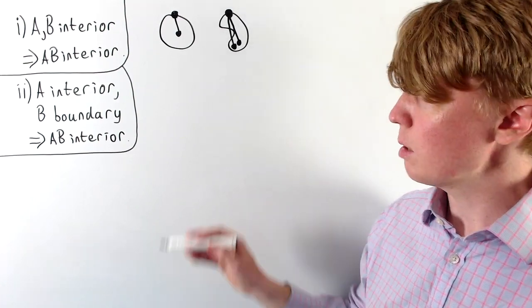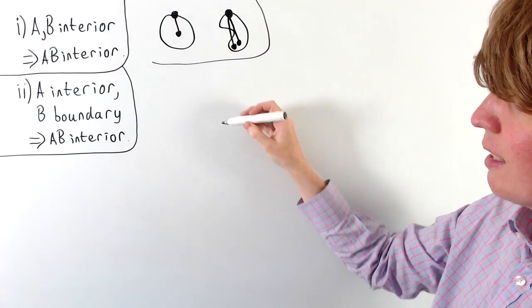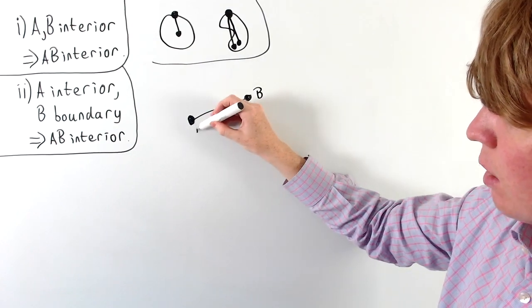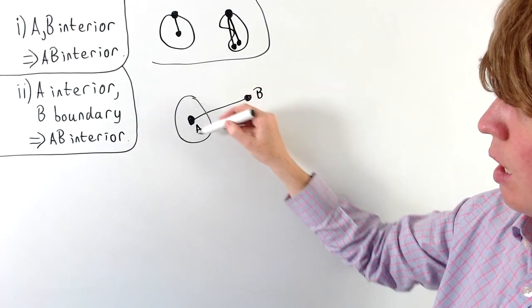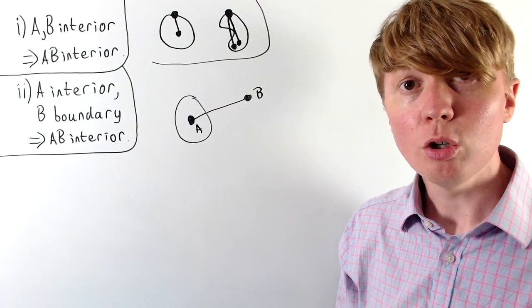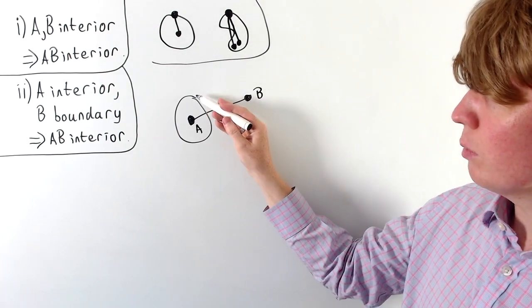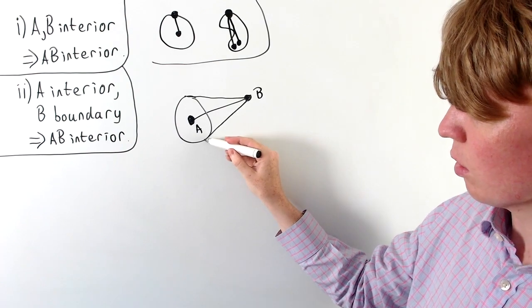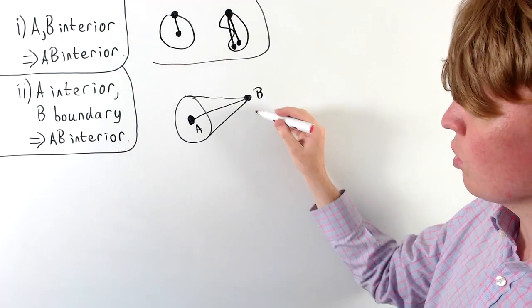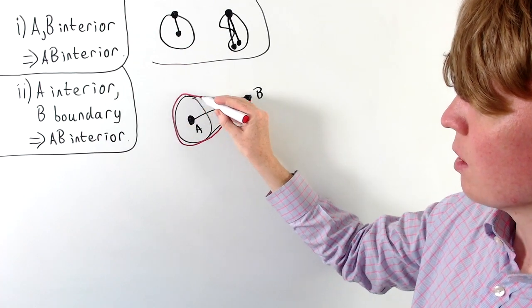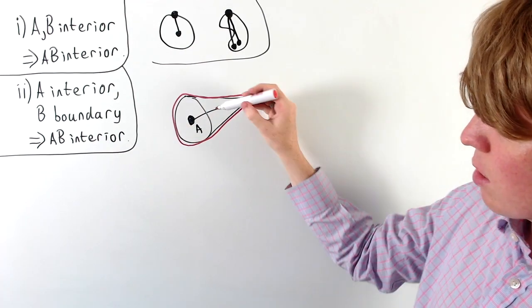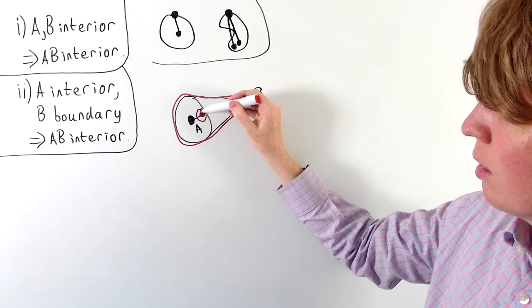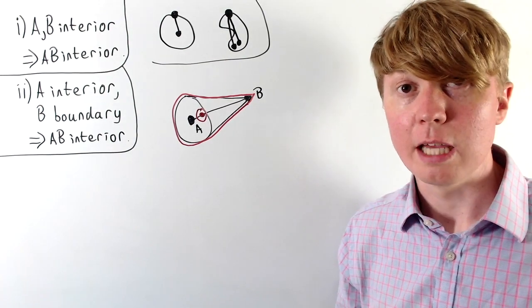To prove this, we apply a similar argument as before. If A is an interior point of our set and B belongs to our set, we can draw a ball of a certain radius around A, all of which belongs to our set. Because all these points belong to our set and B belongs to our set, we can draw tangents out to join this circle. So the entire shape, including point B, is contained within our set. Taking any point on the line segment AB, we can draw a small enough circle which will be contained within our set.